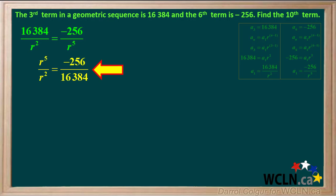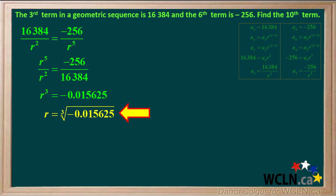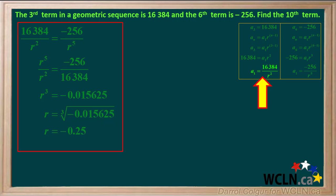Therefore we can say that these two expressions are equal to each other, and we can use this fact to find the value of the common ratio r. We'll rearrange the equation to get r to the fifth over r squared equals negative 256 over 16384, which is equal to negative 0.015625. Taking the cube root of both sides, we get r equals the cube root of negative 0.015625, which is negative 0.25.